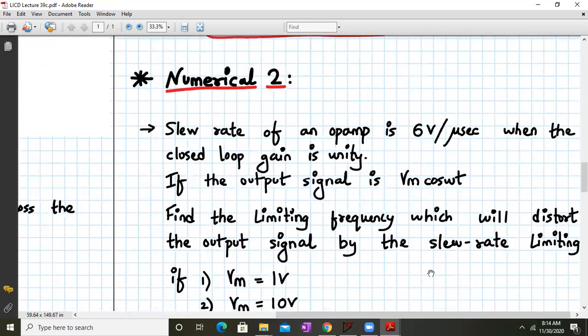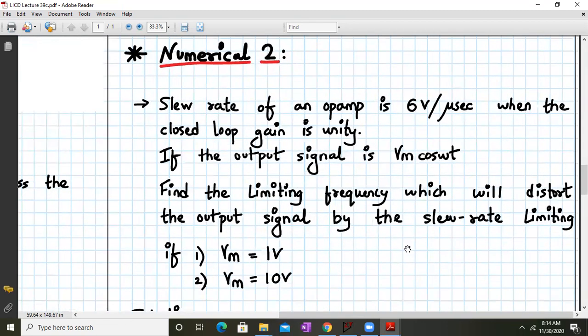Okay. So this much V in maximum peak to peak value of V in should be 159.15 millivolt, so that signal can be applied without distorting the output. Fine. So this is one category of numerical. I hope that you all don't have a query over here. Okay. Next, we'll go to numerical number 2. It's slightly different. So over here, the slew rate of an op-amp is given as 6 volts per microsecond. When the closed loop gain is unity, your output signal is Vm cos omega t.